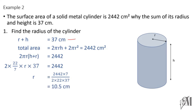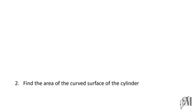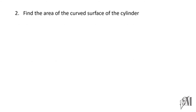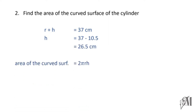The next part asks us to find the area of the curved surface. First we find h: since r + h = 37 and r = 10.5, we get h = 26.5 cm. Then the area of the curved surface = 2πrh. Substituting the values, the answer is 1749 square centimeters.